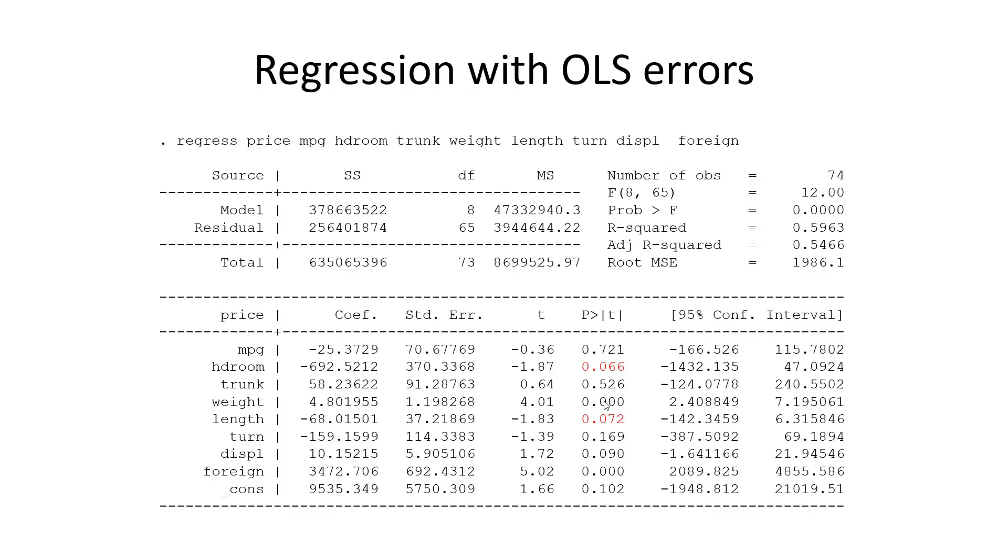And additional weight here adds $4.80. Now, weight is probably measured in kilograms here, so don't be surprised. One kilogram is $4.80, but if you add 100 kilograms, it's $480 already, right? So these values are 6% and 7%; headroom and length are marginally significant here.